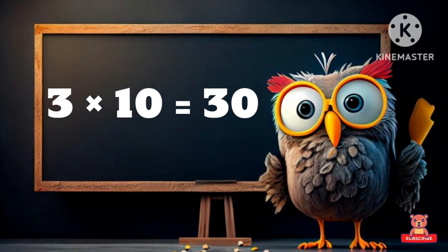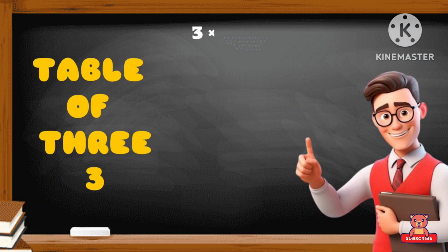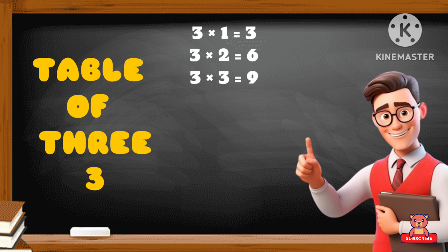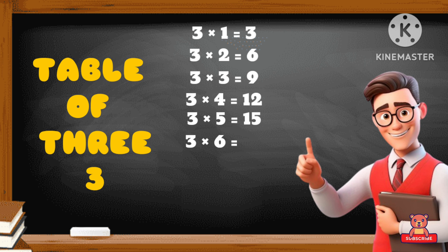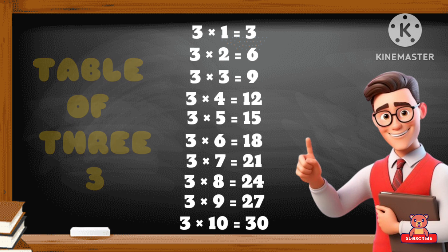Three ten's a thirty. Three seven's a twenty-one, three eight's a twenty-four, three nine's a twenty-seven, three ten's a thirty.